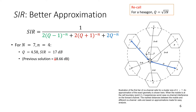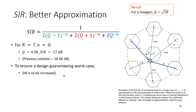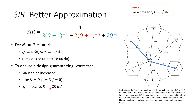Our previous solution of 18.66 dB was based on a less accurate approximation. Using the better expression we are below the requirement. To guarantee the worst case, we increase capital N to 9 (corresponding to i=3, j=0). With N = 9, Q = square root of 3×9 = square root of 27 ≈ 5.2. Substituting Q = 5.2 into the accurate SIR expression gives SIR = 20 dB, which is above the 18 dB requirement.